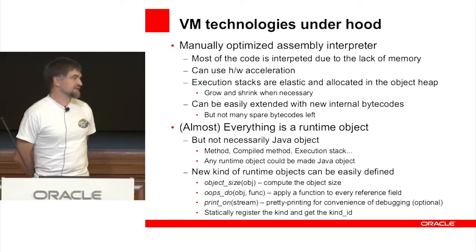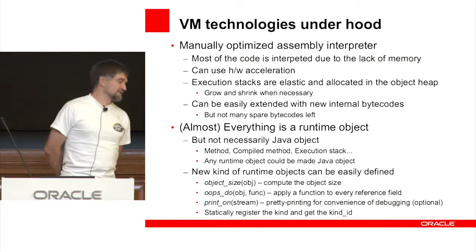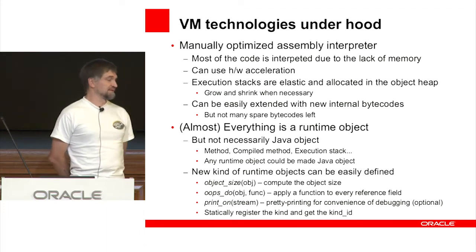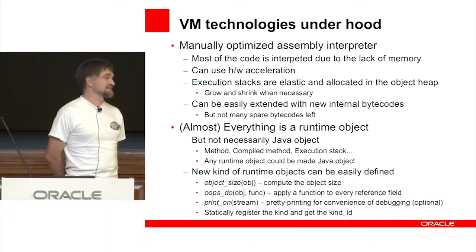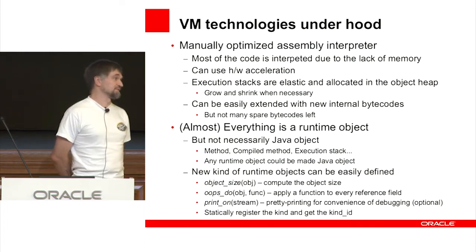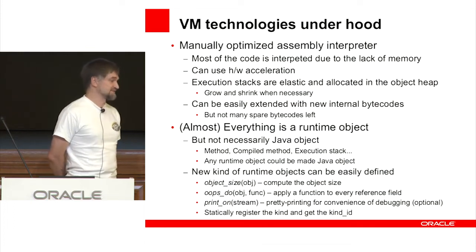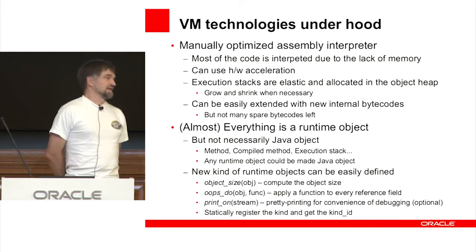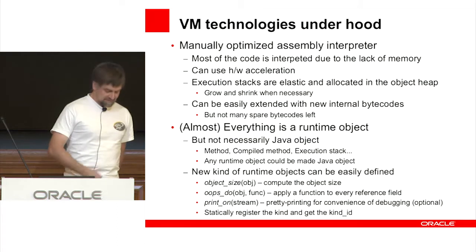Once you have these functions, you register this kind statically and get a kind ID for this type of object, which you use when creating these objects in the heap.